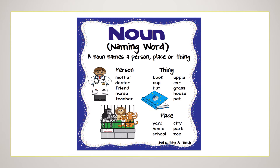Noun — it's a name of a person, place, animal or thing. For example: doctor, mother, friend, nurse, teacher, book, cup, hat, apple, car, grass, house. So the name of a person, place, animal or thing is called a noun.